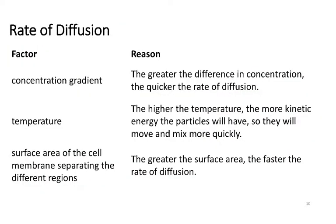There are a couple of things that can affect how fast diffusion occurs. The first is the concentration gradient — the ratio of ratios. The greater the difference in concentration across a membrane, the faster diffusion will occur. Think of a concentration gradient sort of like a gravitational gradient: the steeper a hill is, the faster a ball rolling down is going to pick up speed.